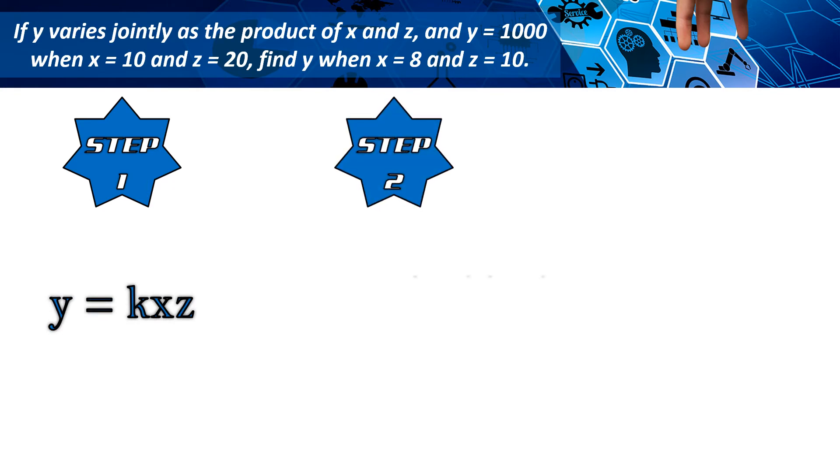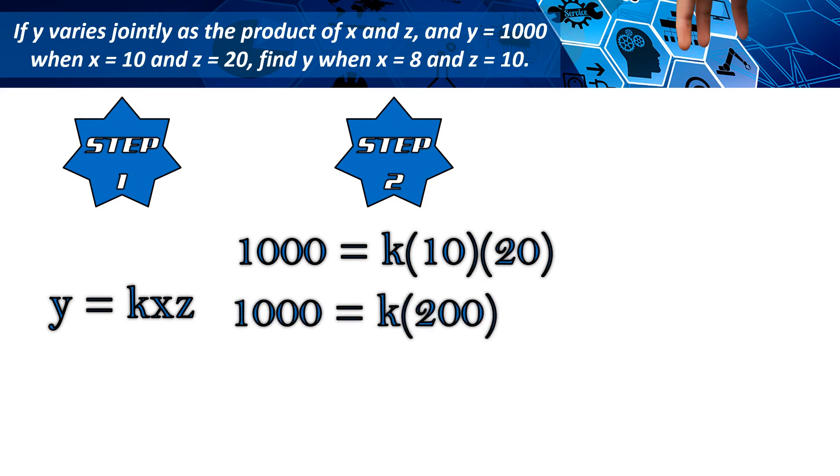Step 2. Substitute the first set of values to find the value of the constant. 1000 equals k times 10 times 20. 10 times 20 equals 200. We will divide both sides by 200, and then we will get the value of k, which is 5.